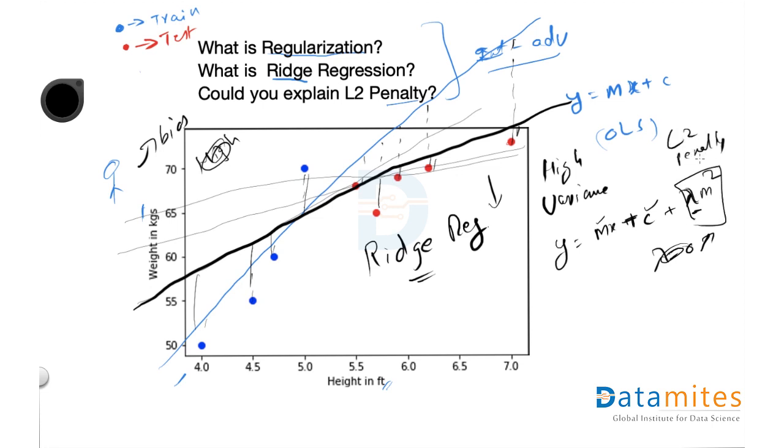This component is your L2 penalty. And the lambda is called as L2 regularization parameter.